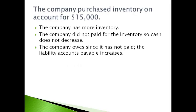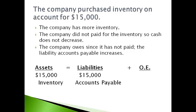The company purchased inventory on account for $15,000. In this transaction, the company has more inventory and owes for the inventory. The liability is reported as accounts payable because inventory is purchased over and over again from suppliers. The accounting equation stays in balance.